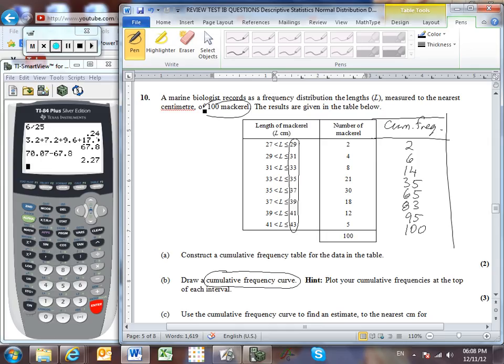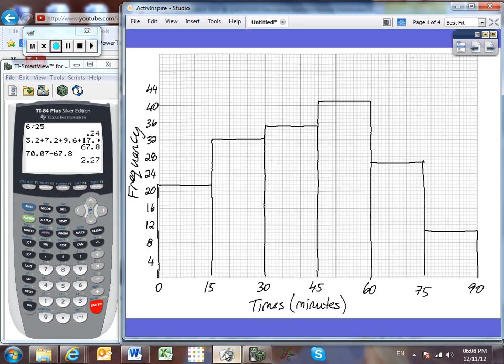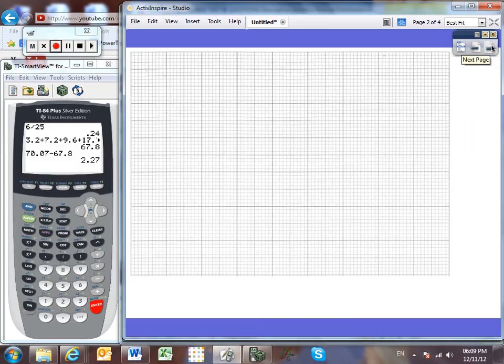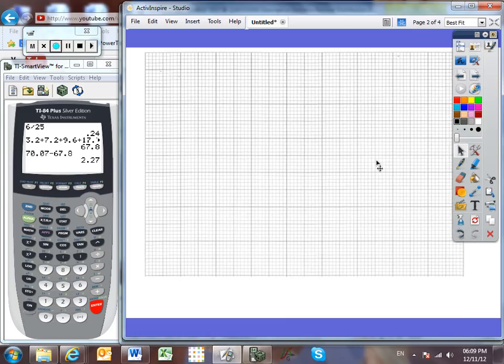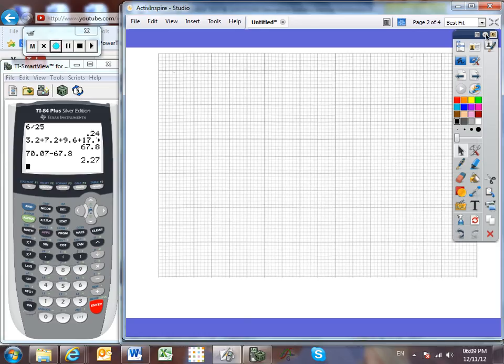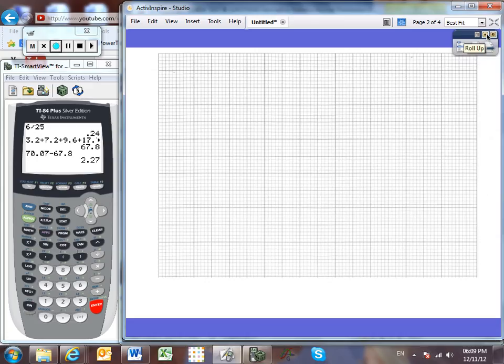Alright, part B. Draw a cumulative frequency curve. And a hint, most questions won't tell you this, that you should plot your cumulative frequencies at the top of each interval. So remember that we will use our mid-interval values when you're looking for an estimate of the mean and the standard deviation. And you will use the upper endpoints of each interval when you are looking for a cumulative frequency curve. So I need to plot points going all the way from, well, all the way out to 43. So let's find a piece of graph paper. I need to plot values that go all the way out to 43.